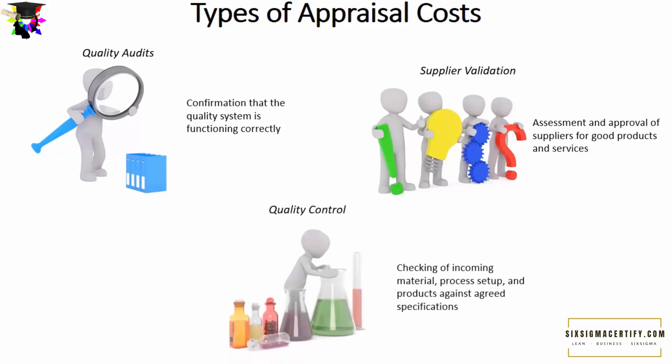The third appraisal cost is quality control — one of the most important costs of good quality, present in any manufacturing organization. Quality control involves checking incoming materials, process setup, and verifying that products meet agreed specifications. Products that pass quality control receive a green signal to proceed; those that fail are wasted. Costs also include sophisticated equipment such as GC-MS and HPLC chromatographic techniques.